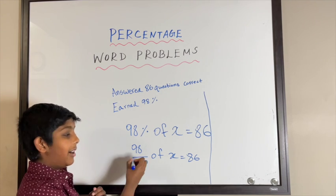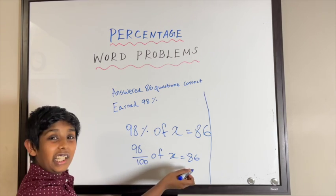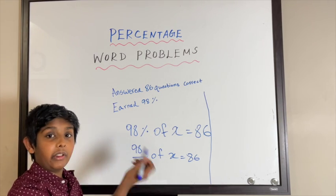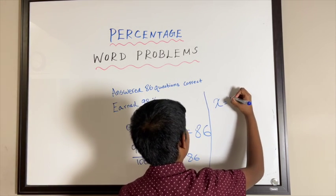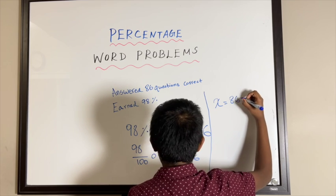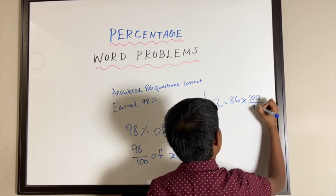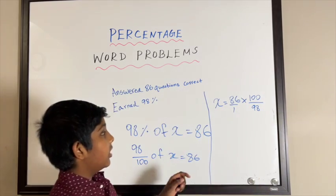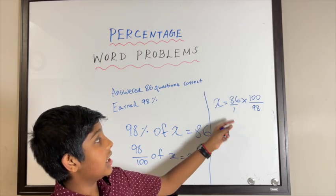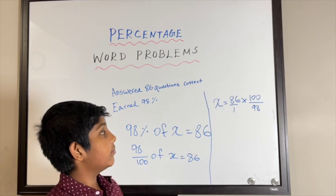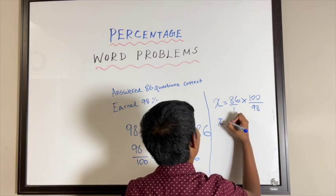Now let's move it to the other side. This is division, so when we're moving to that side our fraction is going to flip. So x equals 86 times 100 over 98. So 86 times 100 is 8600 over 98.